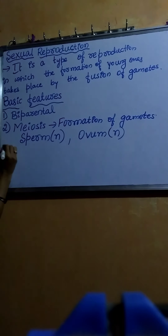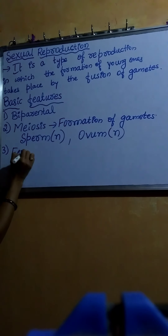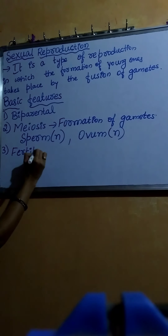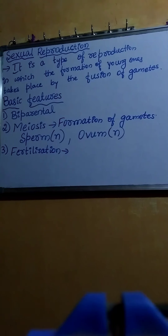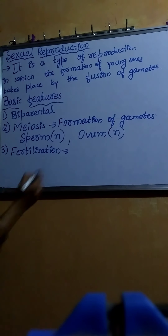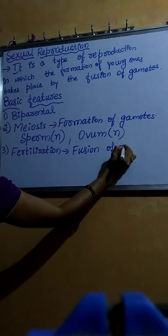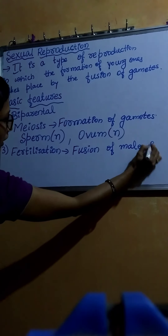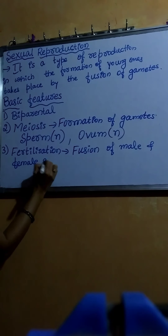Another characteristic feature of sexual reproduction is fertilization. Fertilization is nothing but the process of fusion of male and female gametes, and this fusion gives rise to the zygote.